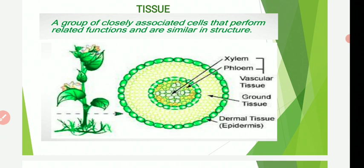Every living organism is cellular — it is composed of cells. In case of multicellular plants, the plant body is composed of various types of cells grouped in a tissue. A group of cells of the same type or mixed type, having common origin and performing an identical function, is known as tissue. We can also say a group of closely associated cells that perform related functions and are similar in their structure are called tissues.